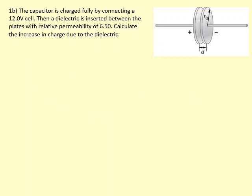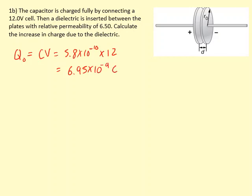The capacitor is charged fully by connecting a 12 V cell, then a dielectric is inserted between the plates with a relative permittivity of 6.50. We need to calculate the increase in charge due to the dielectric. First, we work out the charge without the dielectric using Q = CV: with C = 5.8 × 10⁻¹⁰ F and V = 12 V, we get Q₀ = 6.95 × 10⁻⁹ coulombs.